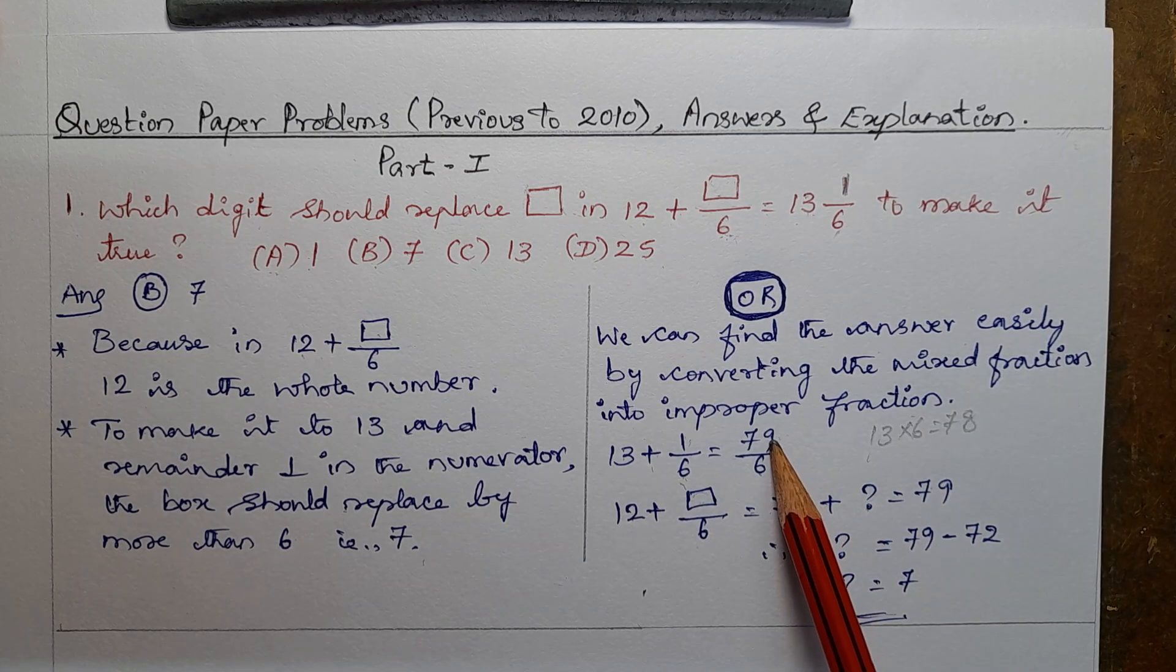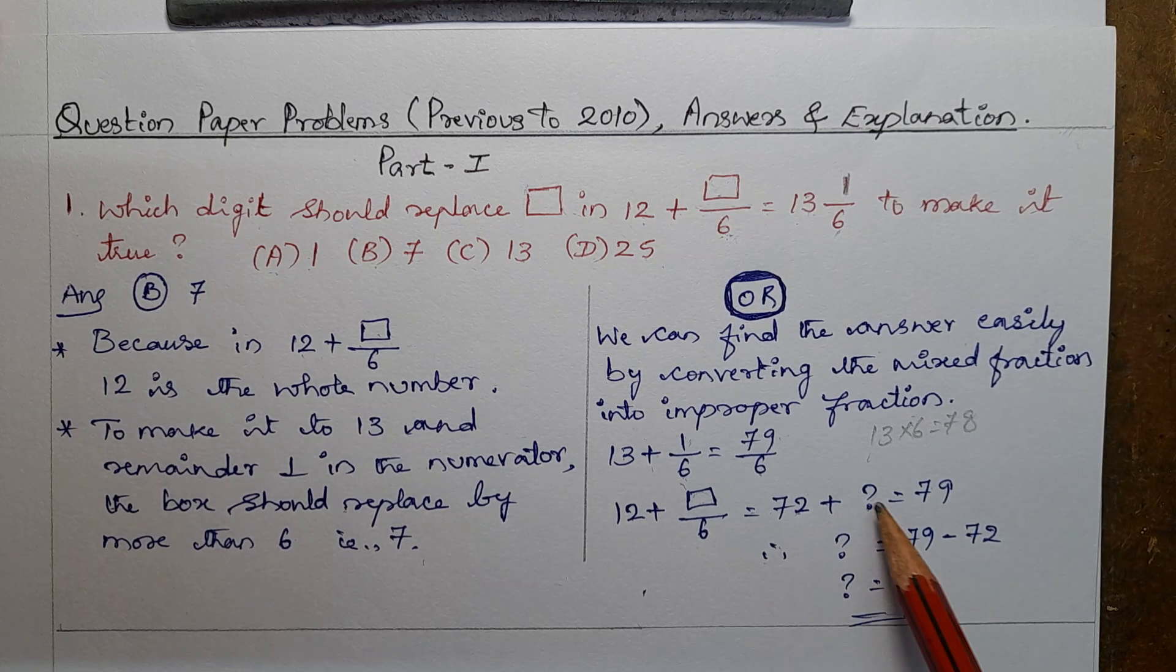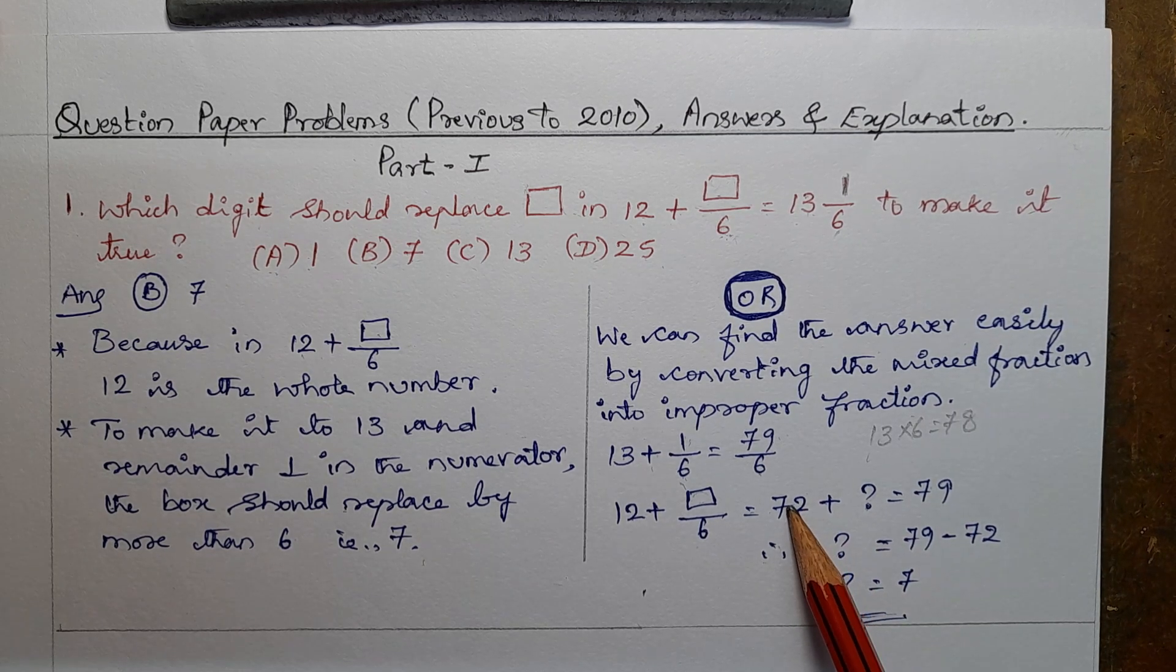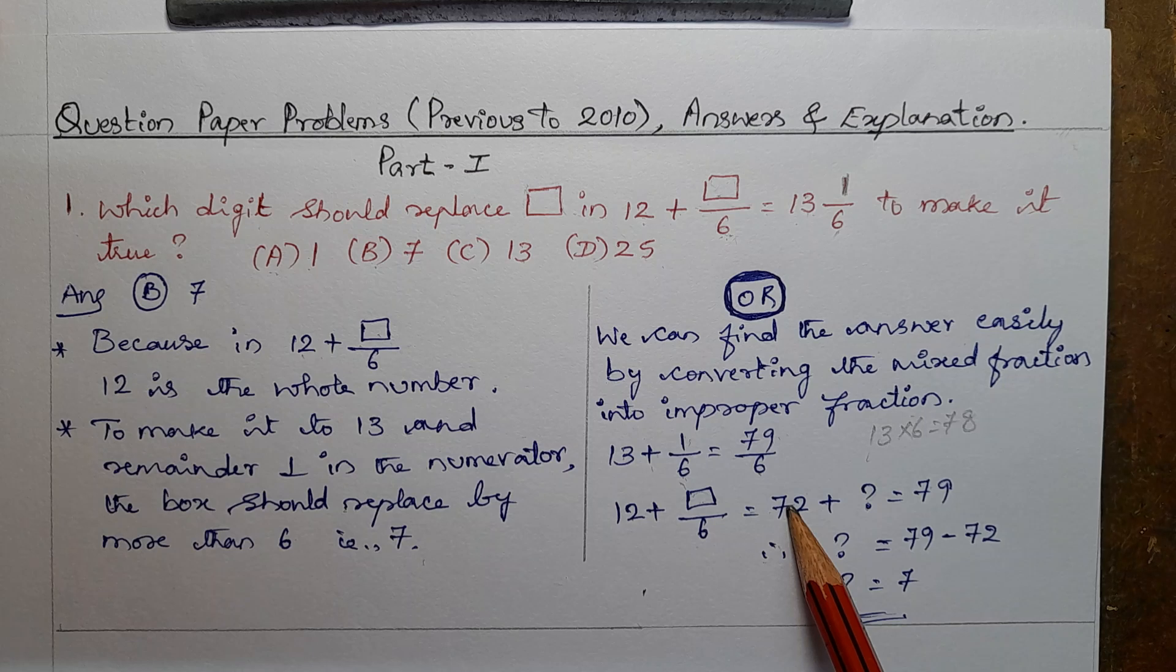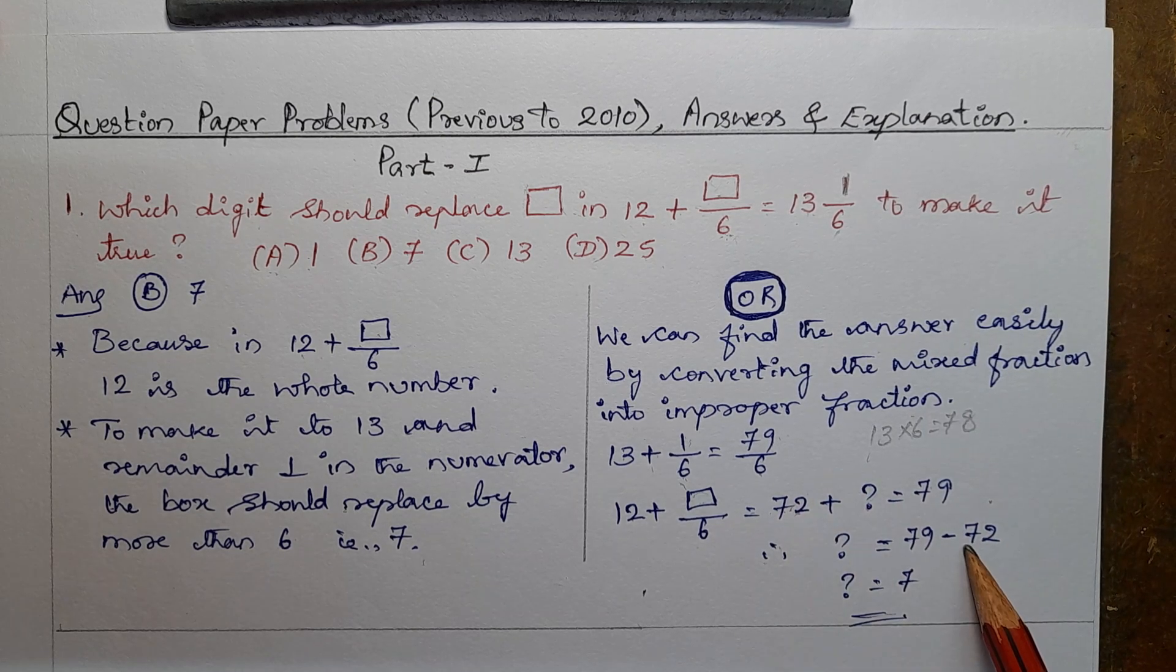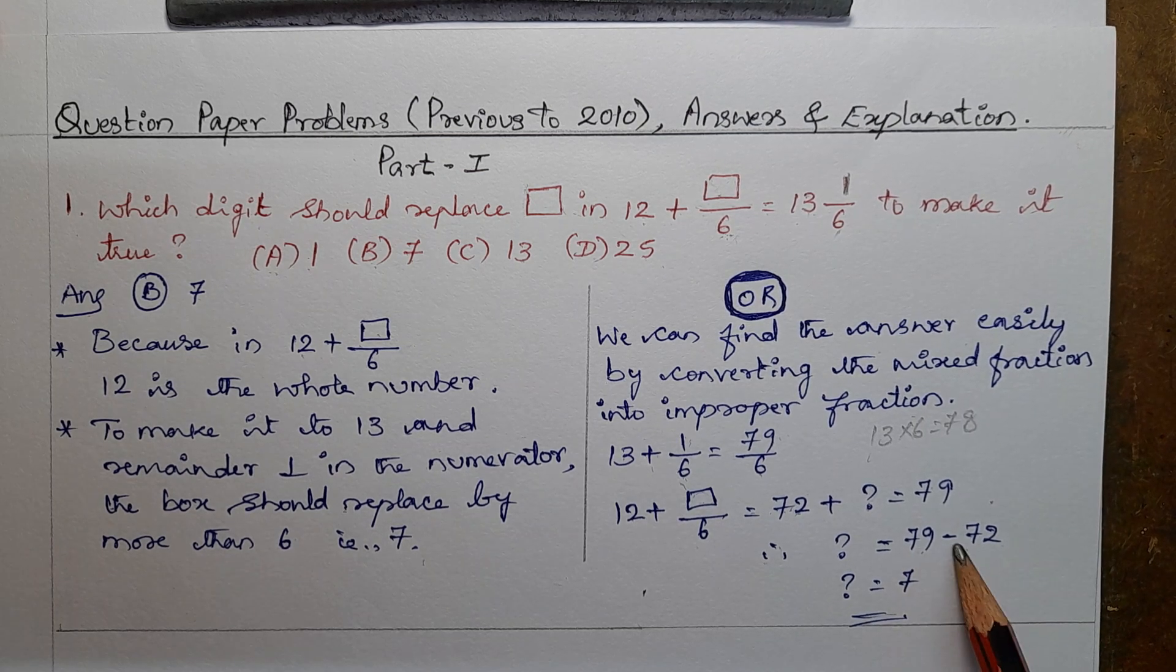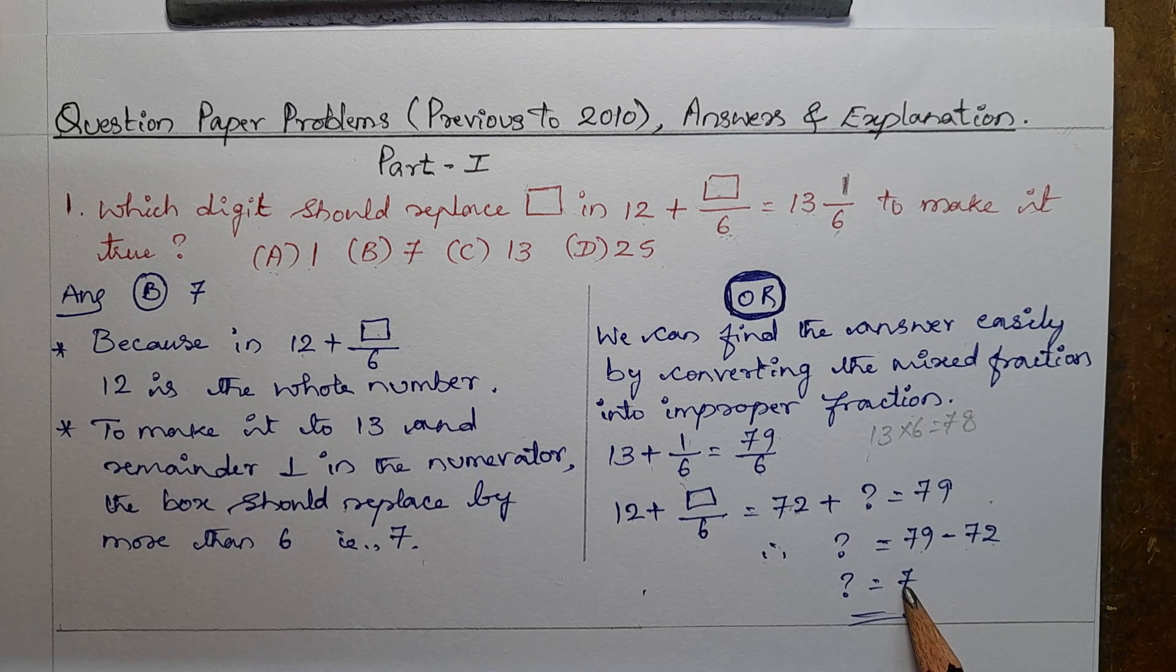The numerator is the same, actually 79. So therefore question mark, the question mark, 79 minus 72 is 7, is the answer.